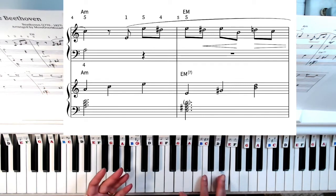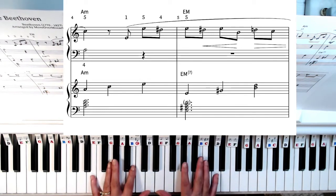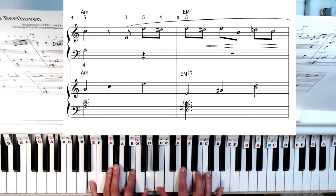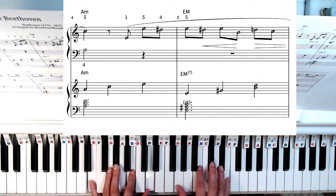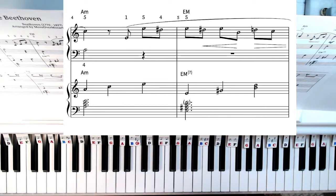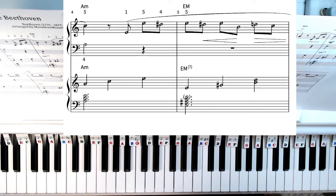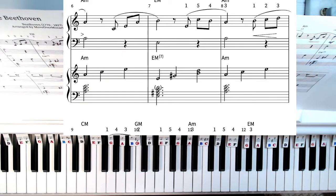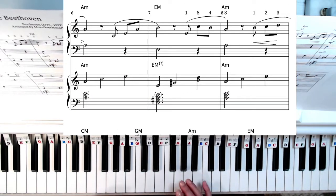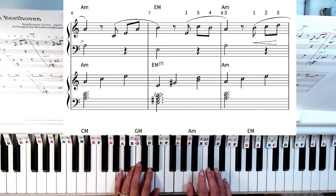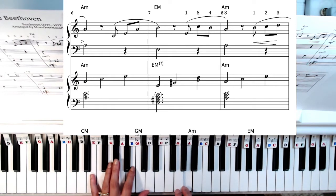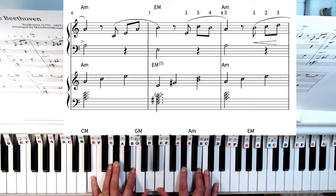Measure five is a repeat of measure two so we're playing the E major seventh. The notes are E, G sharp, B, and D. Now if you haven't guessed by now there is just a moving back and forth between the E major seventh and the A minor chord. So in measure six we're again back in A minor. Measure seven we're in the E major seventh and the notes are E, G sharp, B, and D.